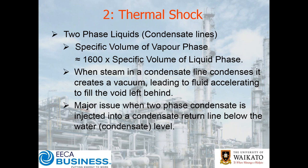When steam in a condensate line condenses, it will also create a vacuum. As the vapor is condensed, you get the reverse of the explosion — an implosion. We create a very localized vacuum effect which has to be filled by either liquid or more vapor, so you end up with a void which causes an acceleration of fluid. When that fluid is accelerating very rapidly and then hits a solid object, you get a bang — otherwise known as water hammer. This is a major issue when two-phase condensate is being injected into a condensate return line below the water level, because steam coming through will flash off some of that condensate and you get a percolator effect.